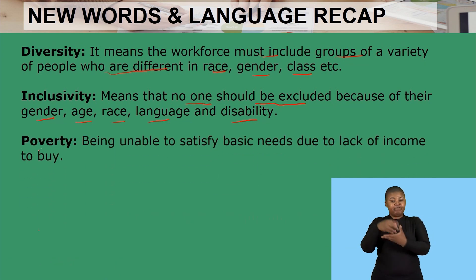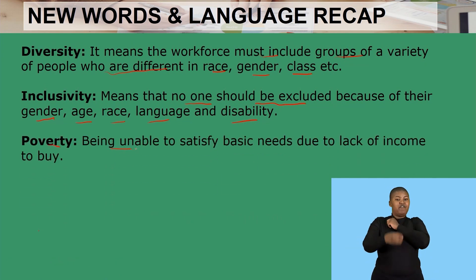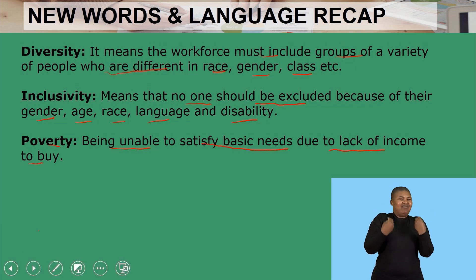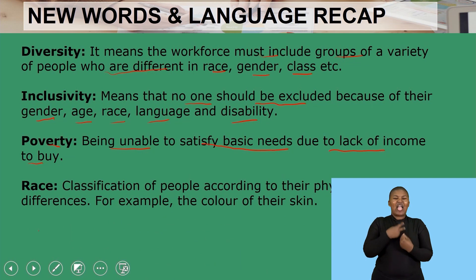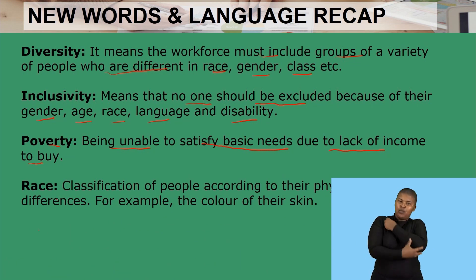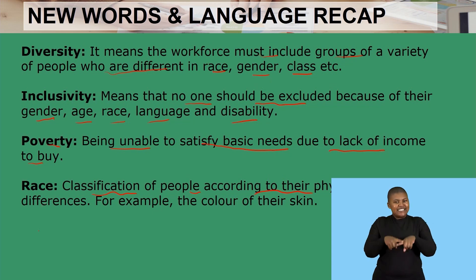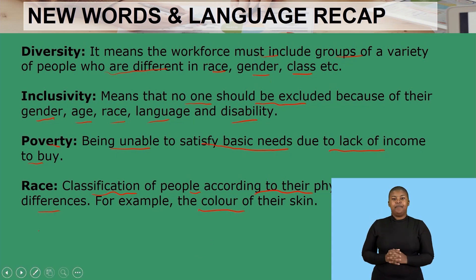Another term we have is poverty, which refers to being unable to satisfy basic needs due to the lack of income to buy. Then another terminology is race, which refers to the classification of people according to their physical differences — for example, the color of their skin.